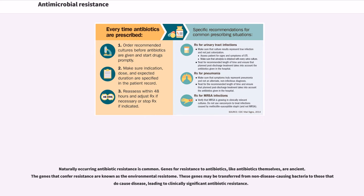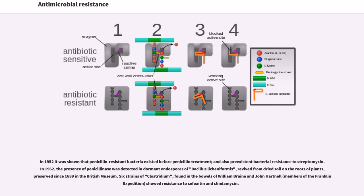Naturally occurring antibiotic resistance is common. Genes for resistance to antibiotics, like antibiotics themselves, are ancient. The genes that confer resistance are known as the environmental resistome. These genes may be transferred from non-disease-causing bacteria to those that will cause disease, leading to clinically significant antibiotic resistance. In 1952 it was shown that penicillin-resistant bacteria existed before penicillin treatment, and also pre-existent bacterial resistance to streptomycin. In 1962, the presence of penicillinase was detected in dormant endospores of Bacillus licheniformis, revived from dried soil on the roots of plants, preserved since 1689 in the British Museum.